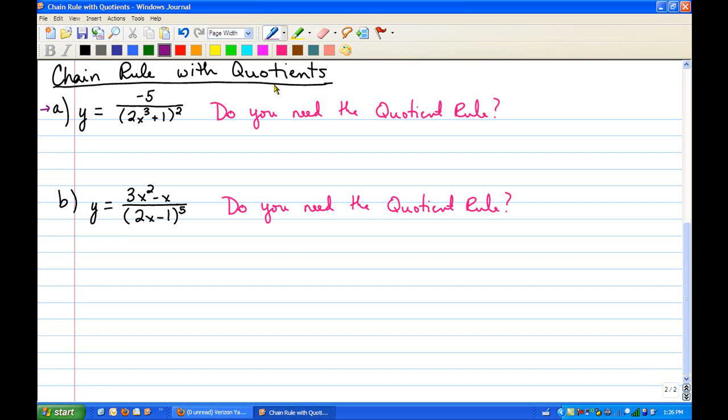Y equals negative 5 over 2x cubed plus 1 squared. Obviously, there's a quotient, so you ask yourself, do you need the quotient rule? Well, the answer is nope, you don't. And again, the only time you need the quotient rule is if both the numerator and denominator contain the variable. Negative 5 doesn't have a variable in it, so we don't need the quotient rule.